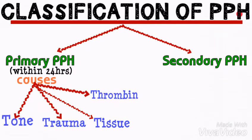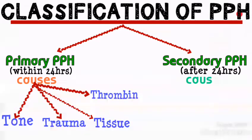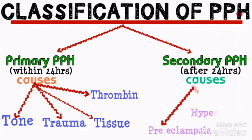We are now looking at the second class of postpartum hemorrhage, which is secondary postpartum hemorrhage. Secondary postpartum hemorrhage is an abnormal bleeding from the genital tract that occurs after 24 hours of delivery until six weeks postpartum. Secondary postpartum hemorrhage can occur due to some maternal conditions such as preeclampsia, hypertension, and diabetes.